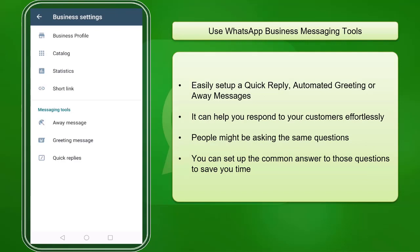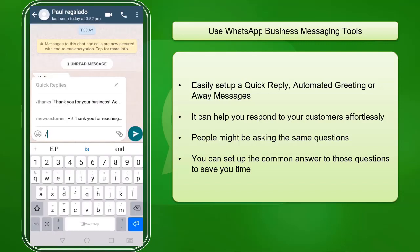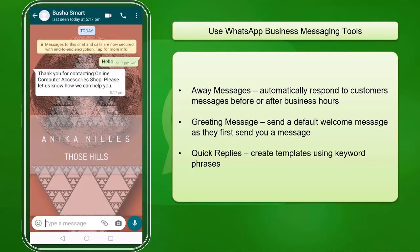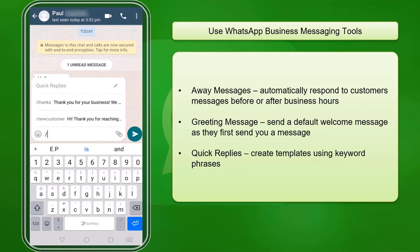Use WhatsApp Business Messaging Tools. Once you have tons of messages, you can easily set up a quick reply, automated greeting, or away messages. This can help you respond to your customers on your behalf and save you time composing the same messages. The Away Message feature allows you to send a customized message when customers contact you before or after office hours. The Greeting Message feature sends a customized message to greet customers the first time they message you. The Quick Replies feature allows you to create templates using keyword phrases and send those saved templates to your customers, saving you time and effort.